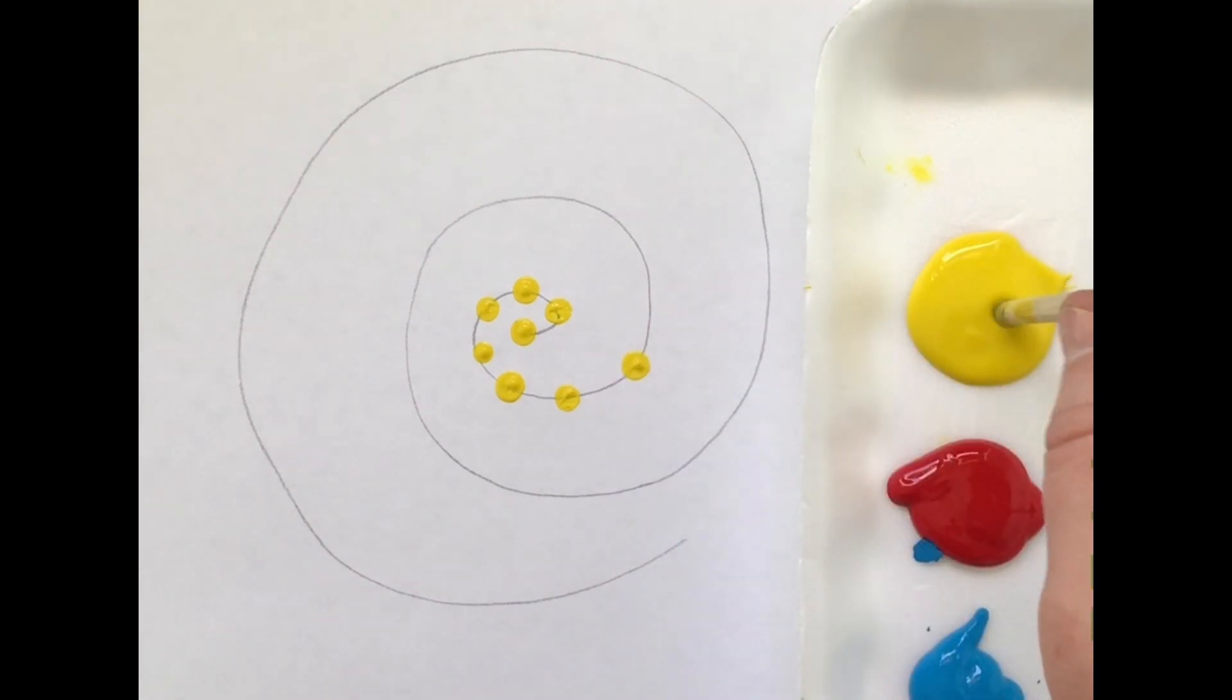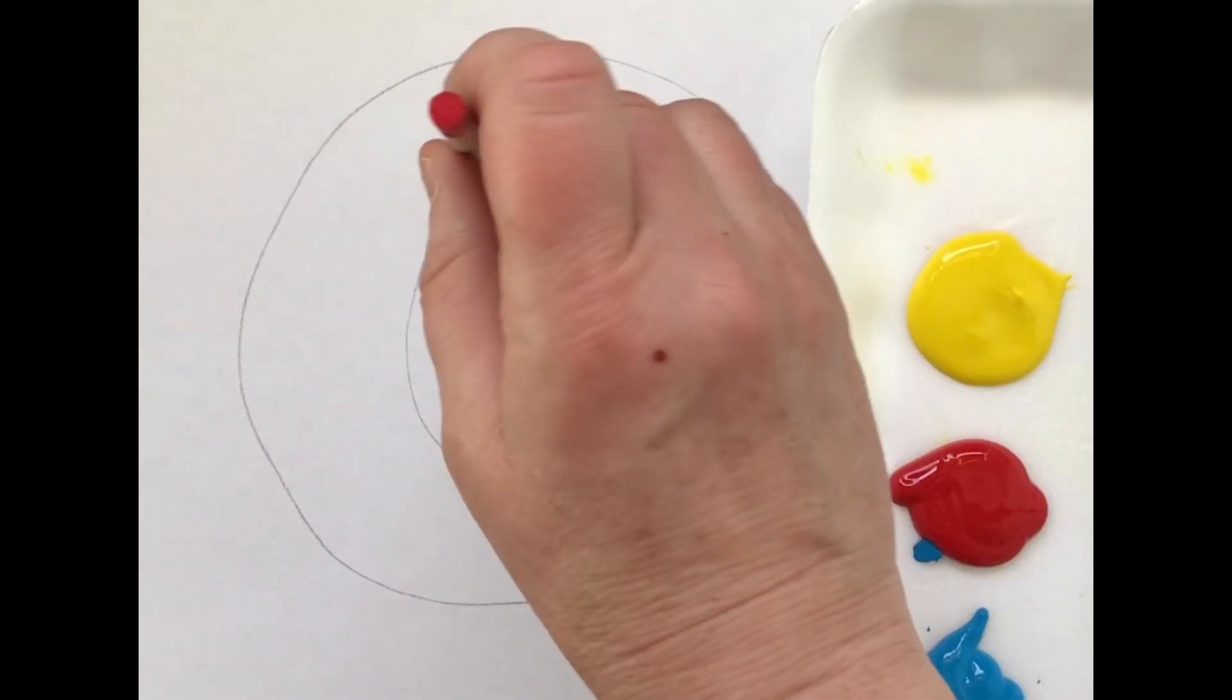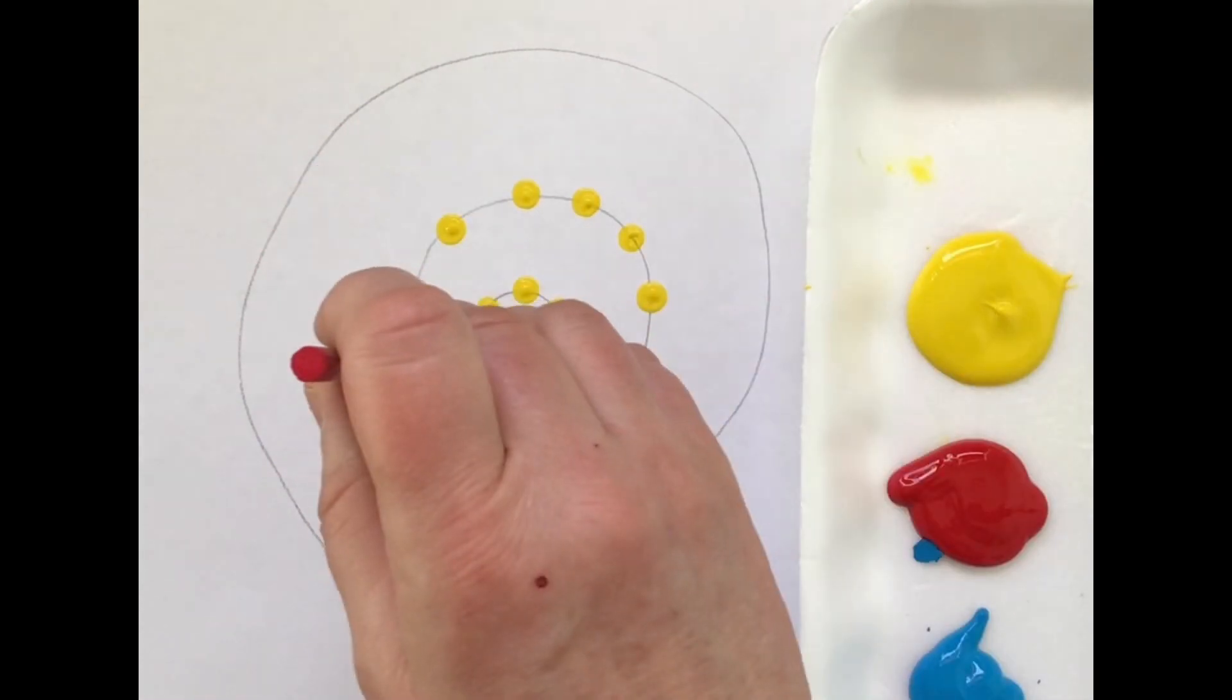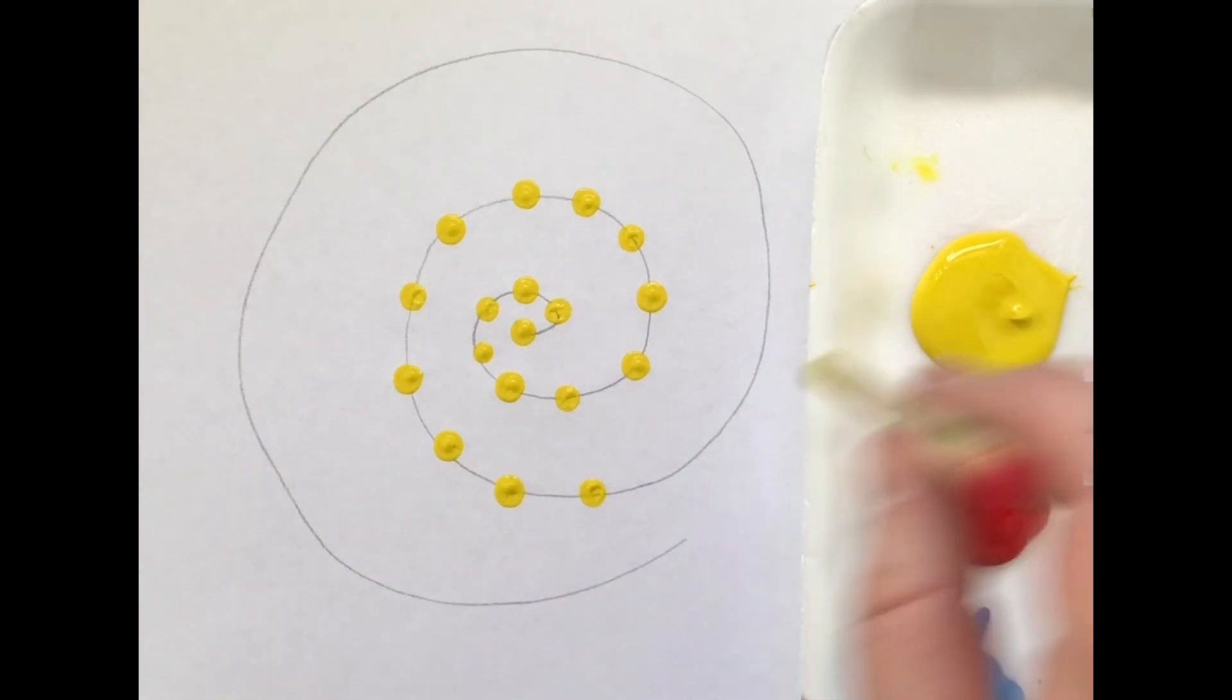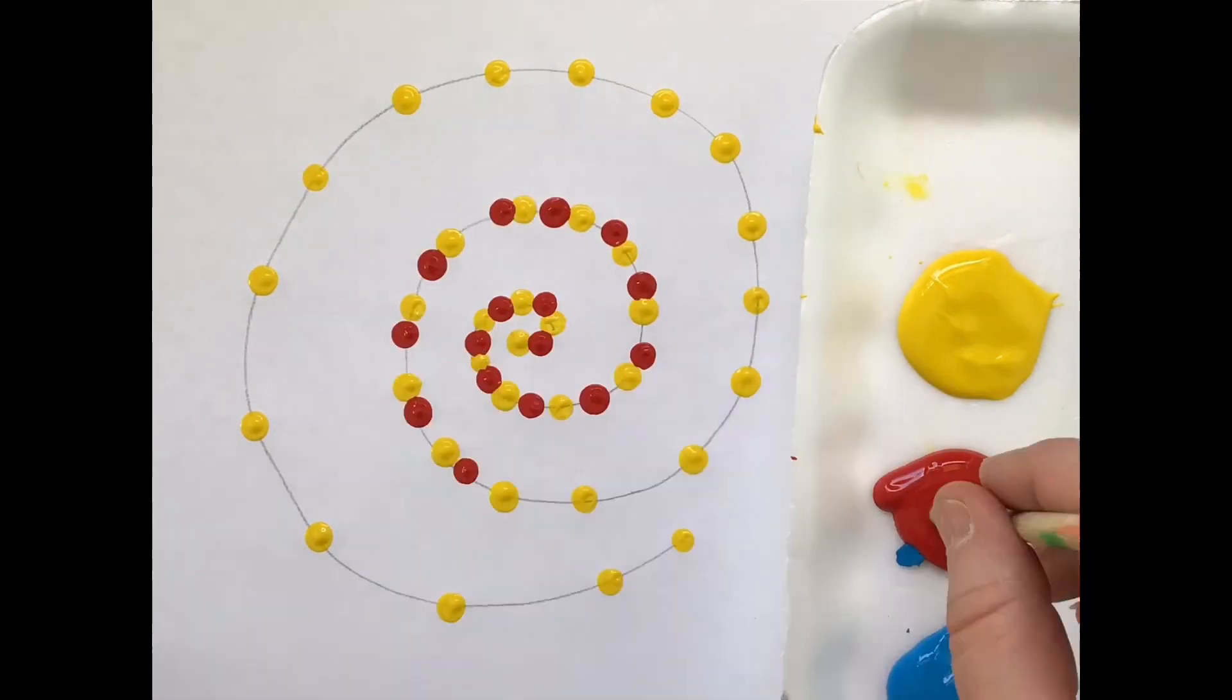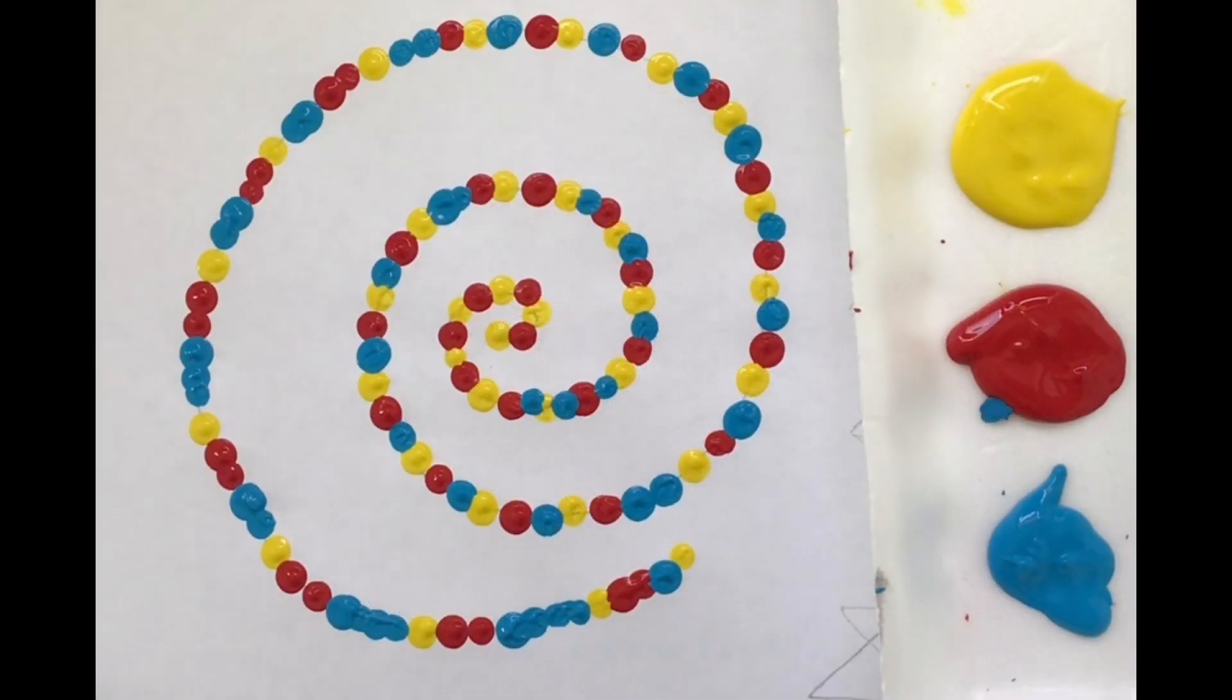This would be called stamping, and the dots that I'm using would be called pointillism. Can you see? Pointillism. Point, pointillism. Yeah, so I'm just gonna go ahead and keep dotting my way around. So I finished using the spiral.